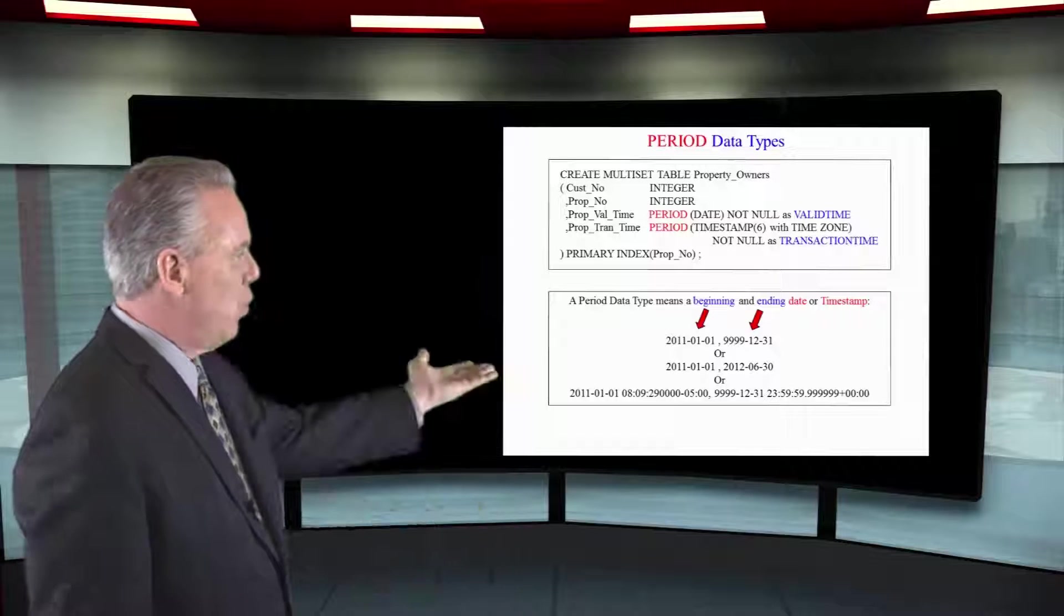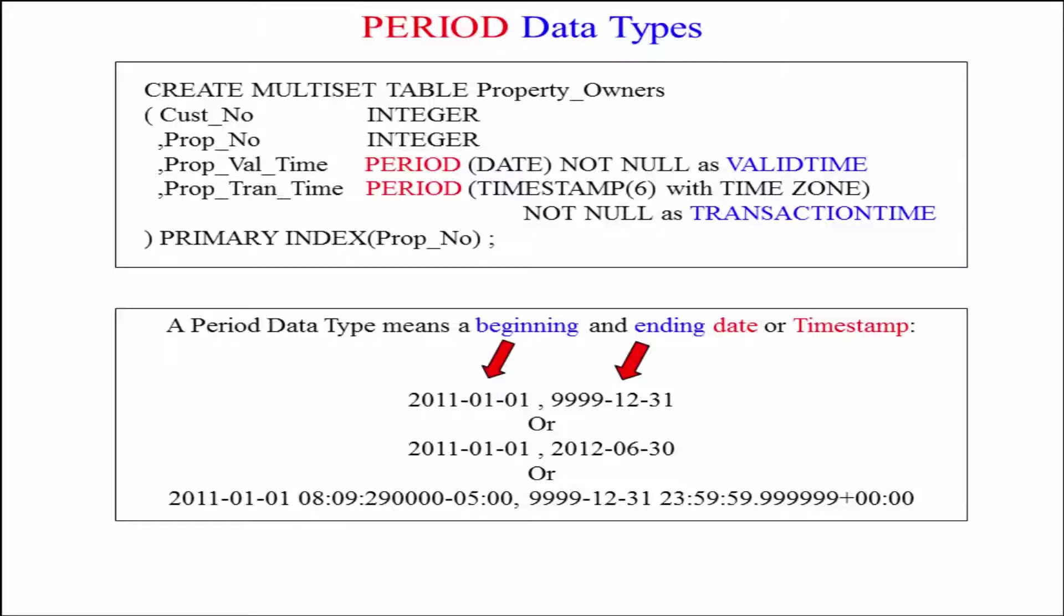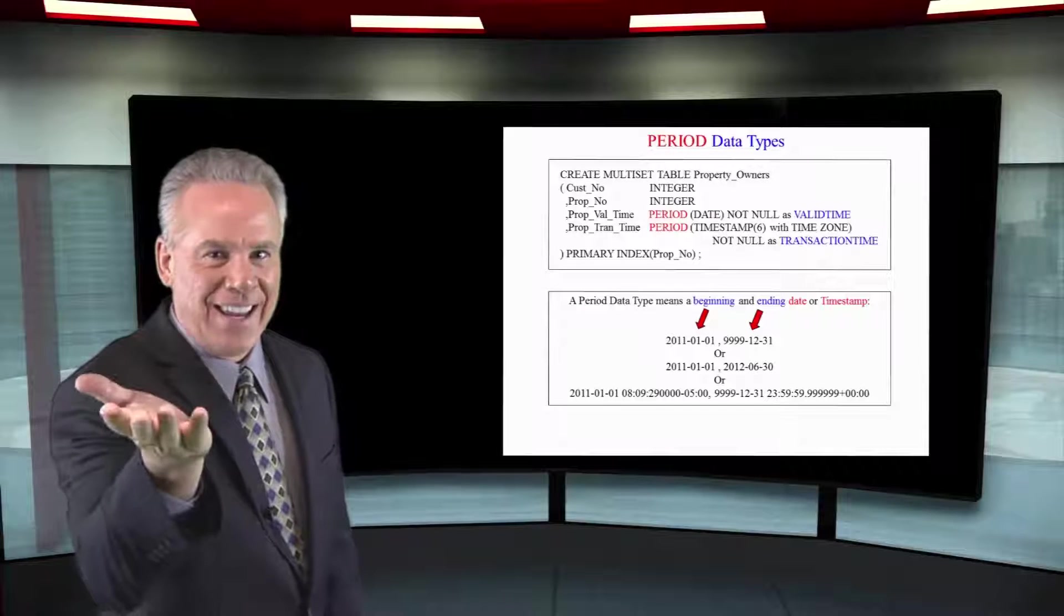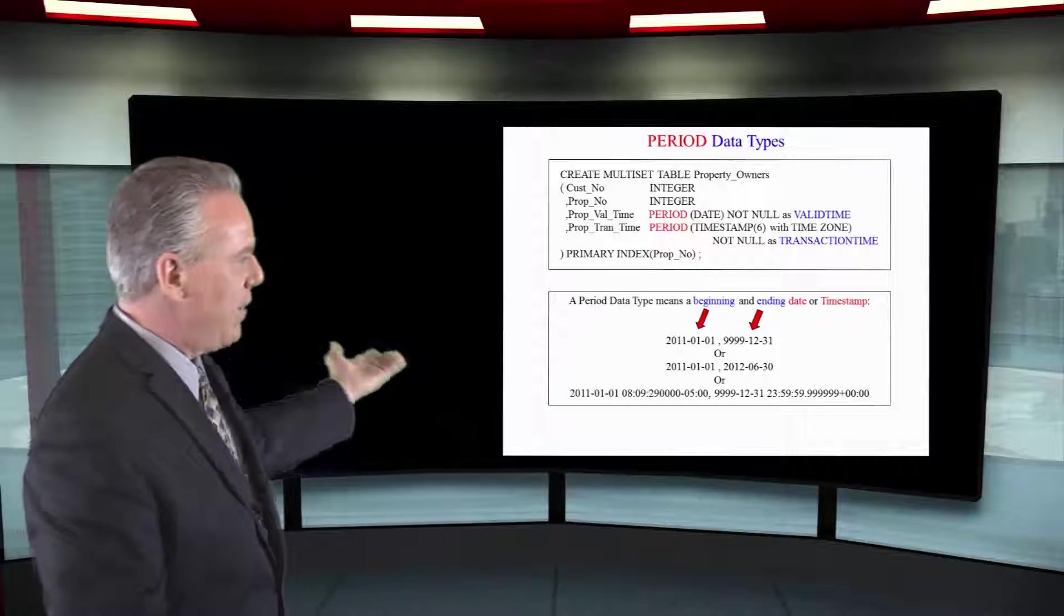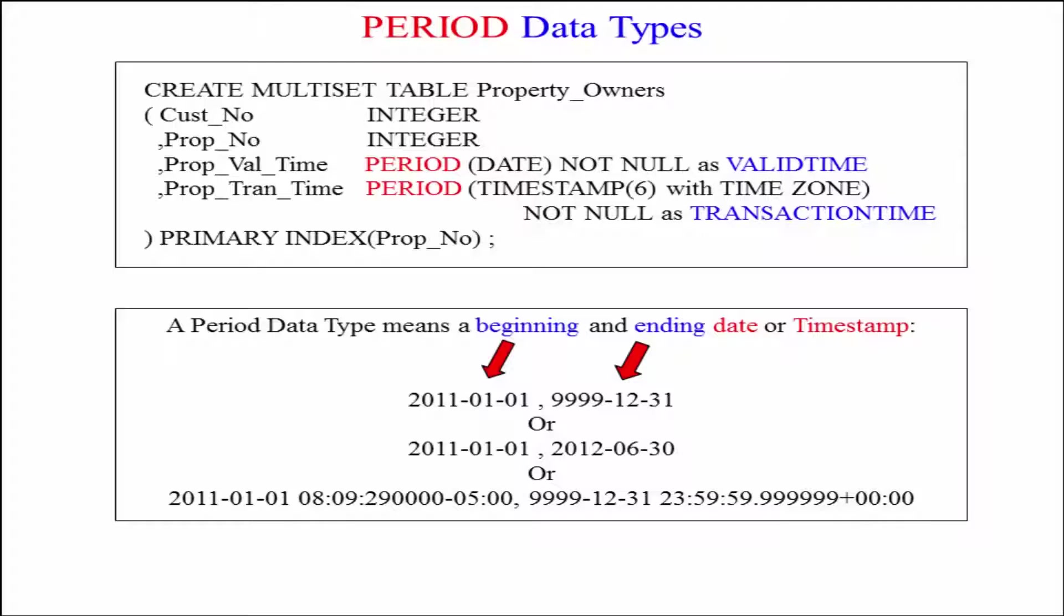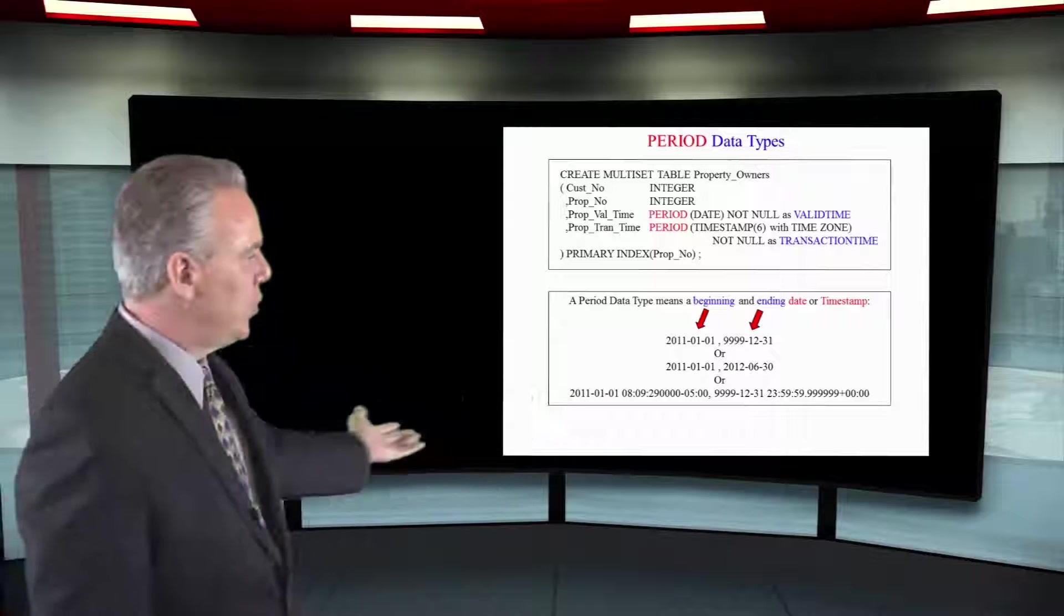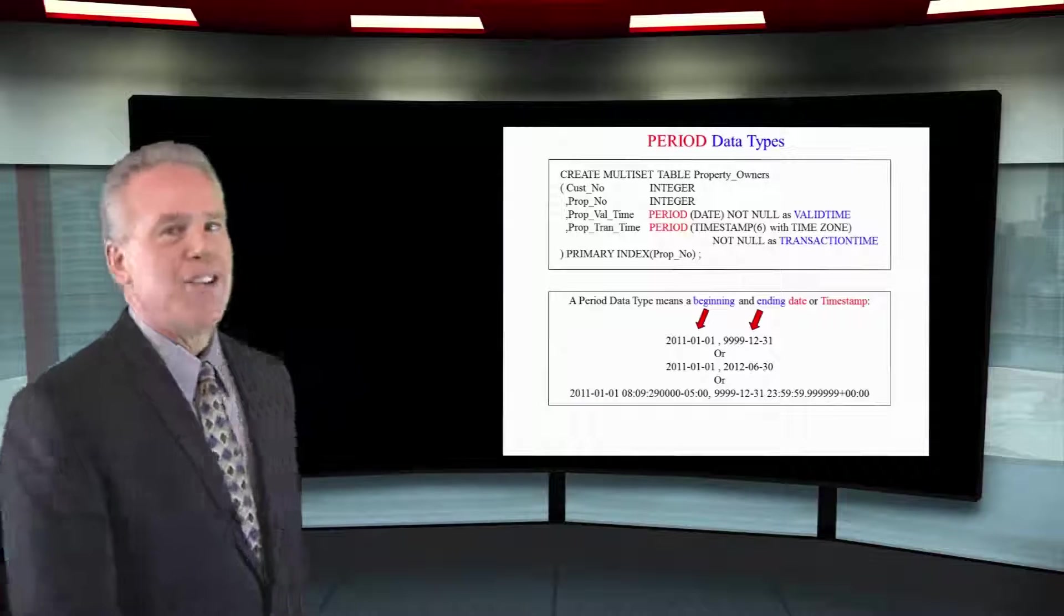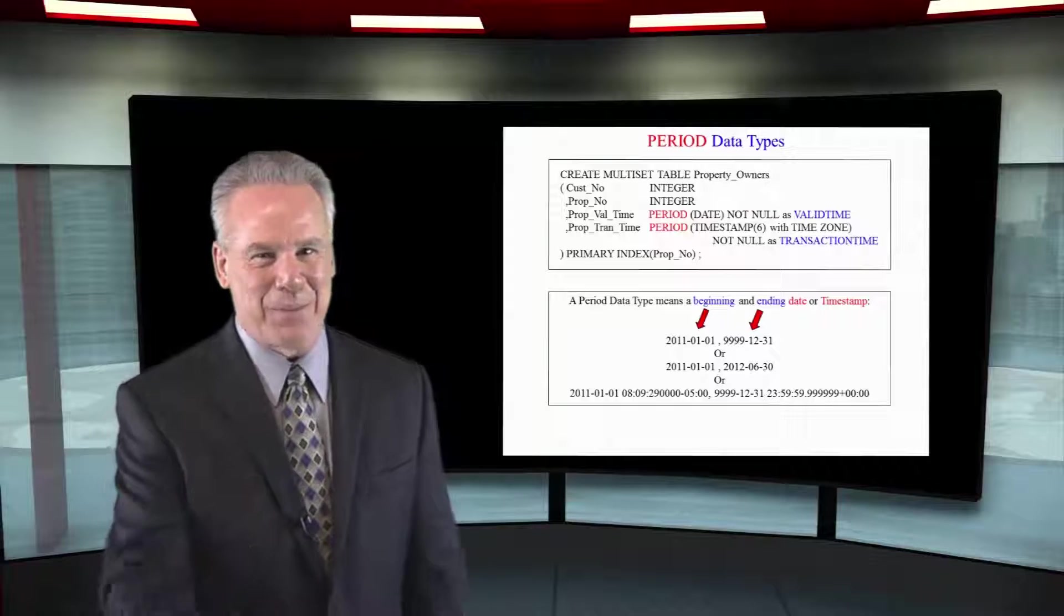Down here you can see some examples of when we bought this, January 1st 2011, and then 9999-12-31. This is still an open row. It had a beginning transaction date or time, but it did not have an ending, and that's how they say they still own this. It's still open. As you can see in the next, we have a beginning date and an ending date, which means it is a closed row. That period of time has come and gone from the beginning to the end. You can have that as either a date, or you can see a timestamp beginning and then the 9999-12-31, which means that row is still open from a timestamp perspective.